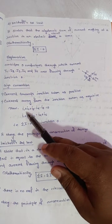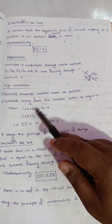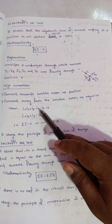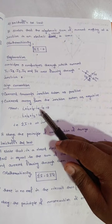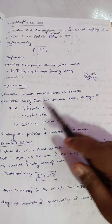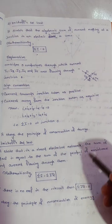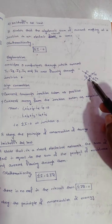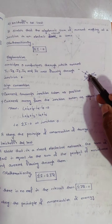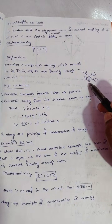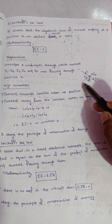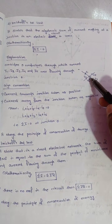Kirchhoff's current law: i₁ + i₂ + i₃ − i₄ − i₅ = 0. The algebraic sum of currents at a junction is zero.